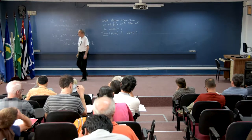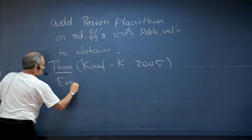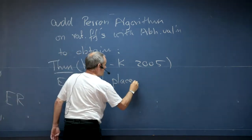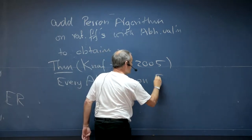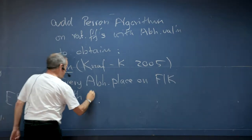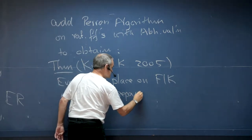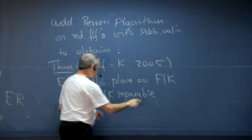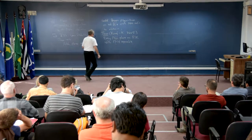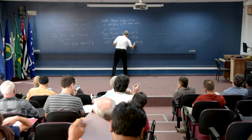This theorem says that every Abhyankar place on a function field F over k, with the single assumption that F_P over k is separable — which actually follows from local uniformization so we need to ask for it — admits local uniformization.